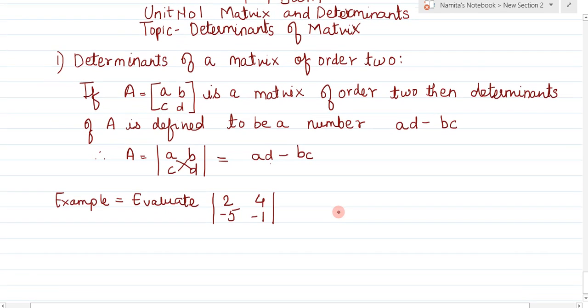Now let's see an example. Example 1: evaluate the determinant with elements 2, 4, -5, -1. The order of this determinant is 2 rows and 2 columns, so 2 by 2.